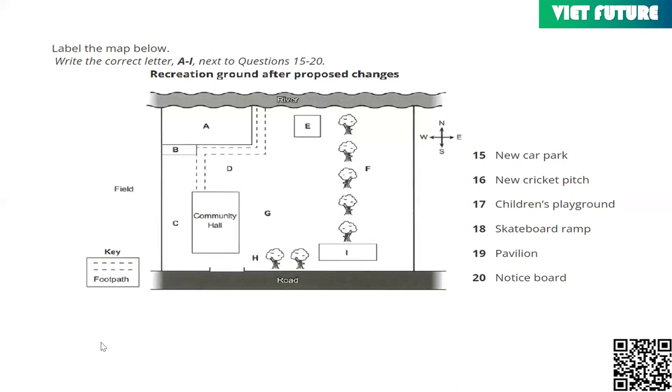The plans to have a pedestrian crossing next to the post office have unfortunately had to be put on hold for the time being. We'd budgeted for this to be done this financial year, but then there were rumours that the post office was going to move, which would have meant there wasn't really a need for a crossing. Now they've confirmed that they're staying where they are, but the highways department have told us that it would be dangerous to have a pedestrian crossing where we'd originally planned it, as there's a bend in the road there, so that'll need some more thought.